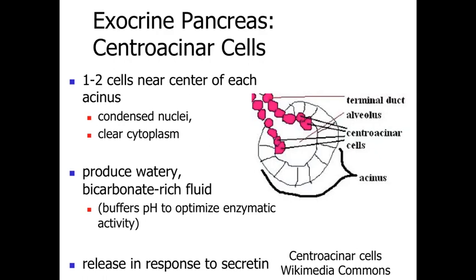In addition to the pancreatic acinar cells, we also have central acinar cells — sitting at the center of these little clusters of secretory cells. Instead of the basal basophilia of the pancreatic acinar cells, the central acinar cells have a centrally condensed nucleus and a relatively clear cytoplasm. These cells produce a watery, bicarbonate-rich fluid. Bicarbonate has the ability to buffer materials, so the central acinar cells are releasing a buffer that mixes with the highly acidic materials coming out of the stomach, bringing that acidic pH down to a more neutral pH so that the pancreatic enzymes can work.